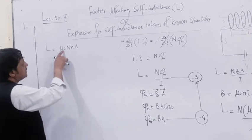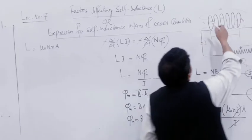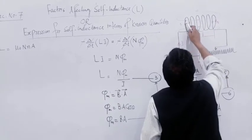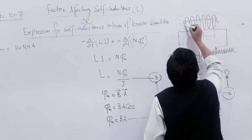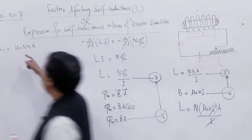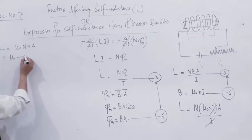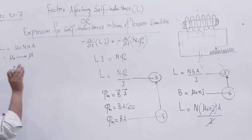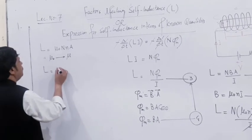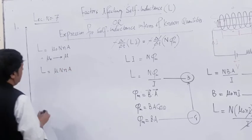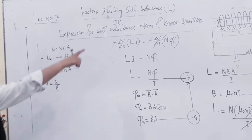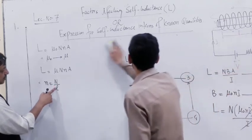Remember, if this coil is wound upon a magnetic material — for example, if you place an iron rod inside it — iron is a ferromagnetic material, so its permeability is higher. In that case, mu-naught is replaced by mu, where mu is the permeability of a material medium. So L equals mu times N times small-n times A. Remember that small n means number of turns per unit length.